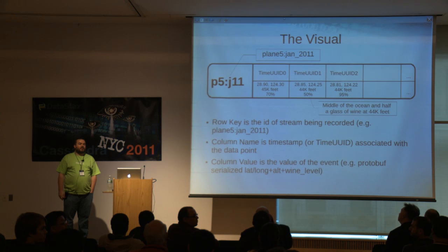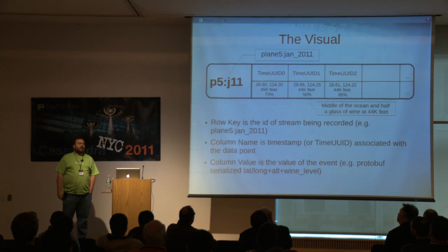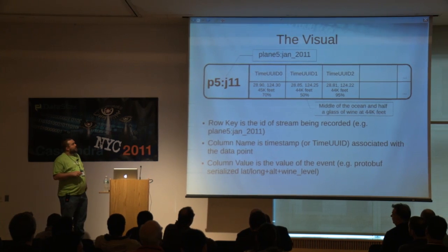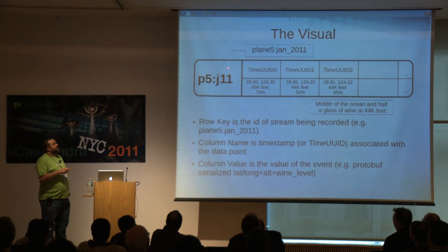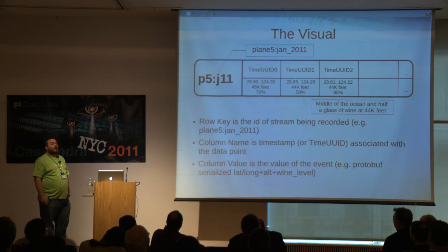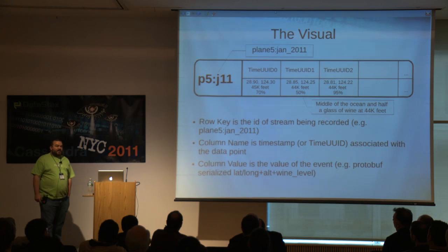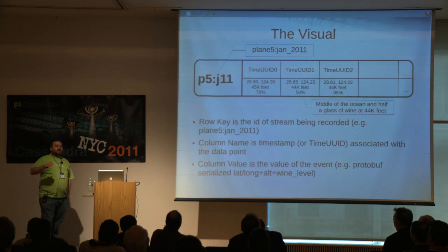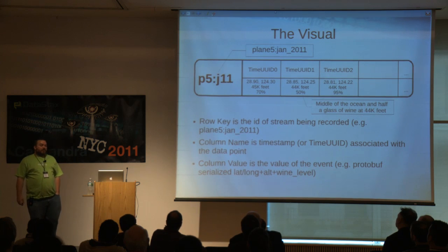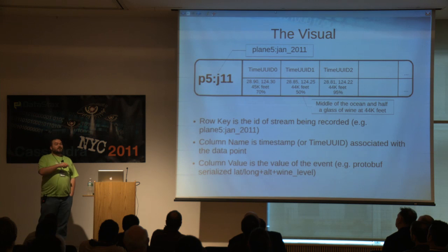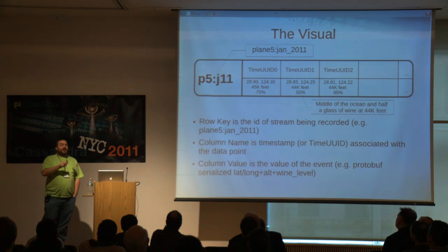On pivoting the structure: 'plane 5, January 2011' is the row key — a single row within a column family. If you pivoted so that a time UUID was the row key with all plane values across that row, it depends on how you want to query the information. If you're interested in recreating a stream for a plane — what plane 5 was doing — this structure is best, because all the data you care about is there and nothing you don't care about is there.